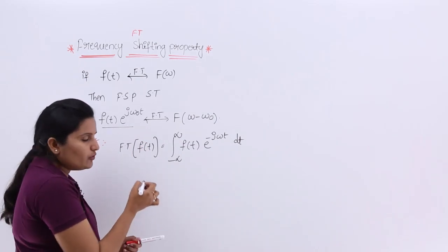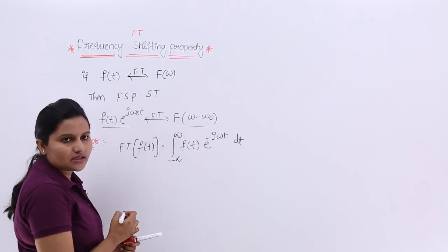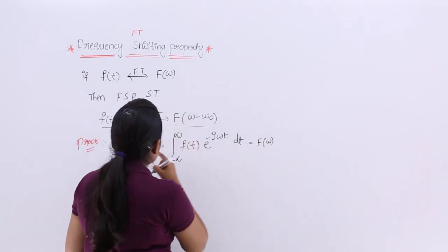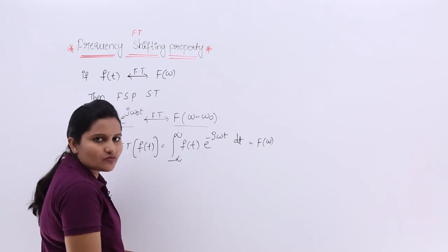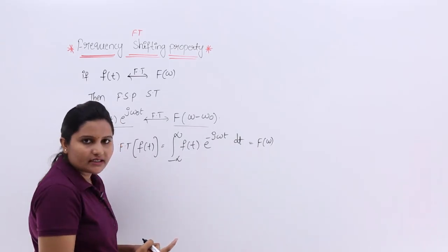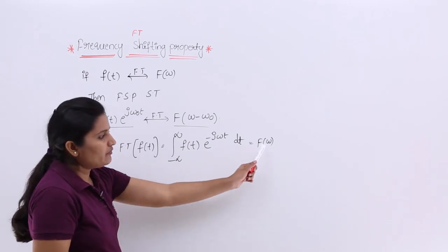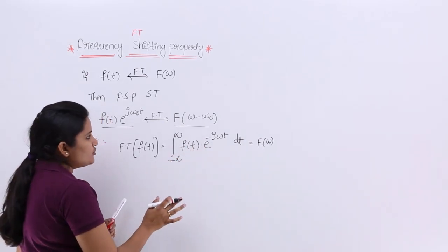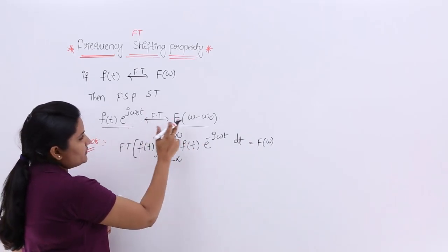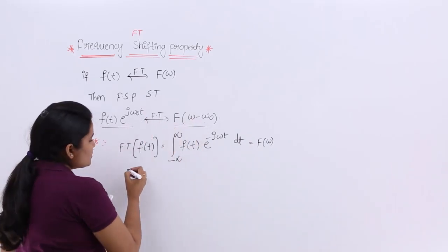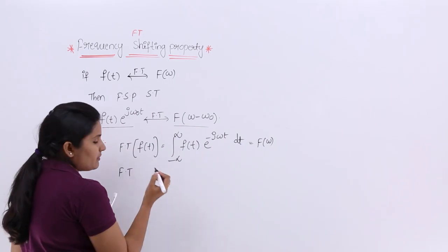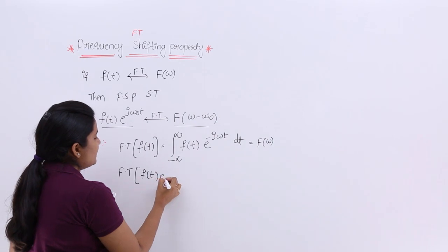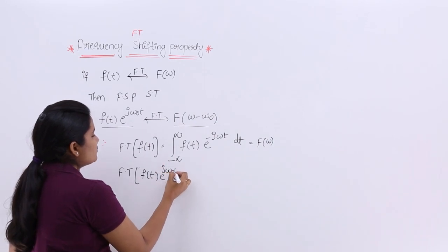We need to prove that the Fourier transform of f(t)·e^(jω₀t) is equivalent to F(ω - ω₀). The Fourier transform of f(t) is F(ω) — always the transform is indicated with a capital letter and in terms of frequency. So if this is F(ω), we need to show the Fourier transform of the resultant signal. I want to consider the LHS: the Fourier transform of f(t)·e^(jω₀t).